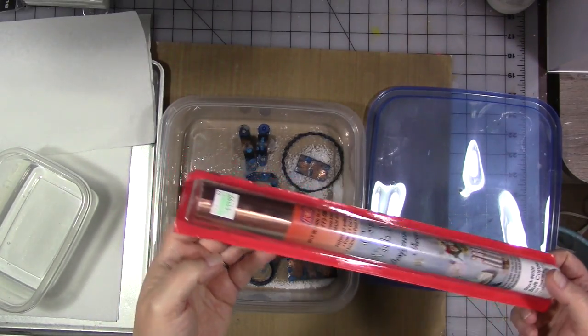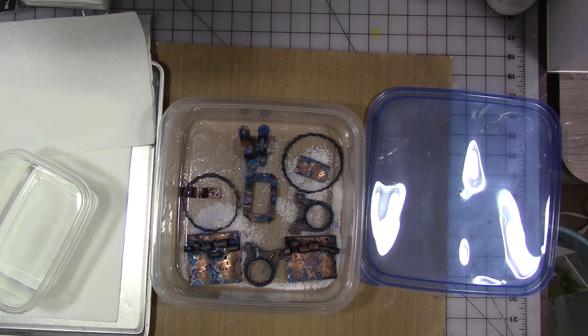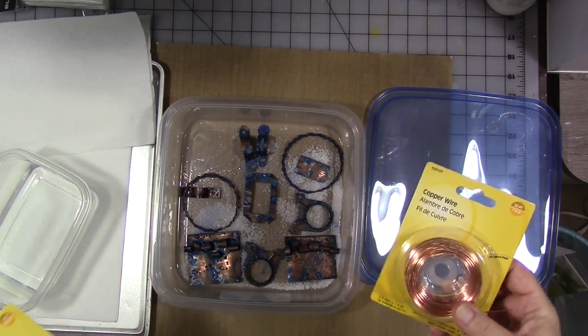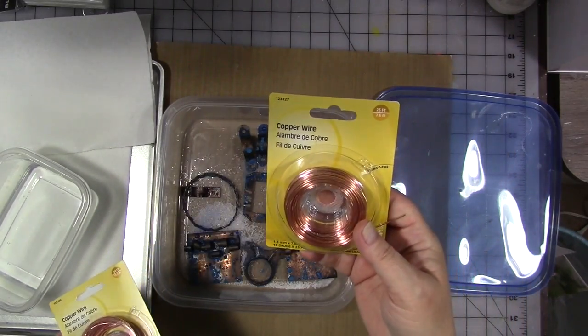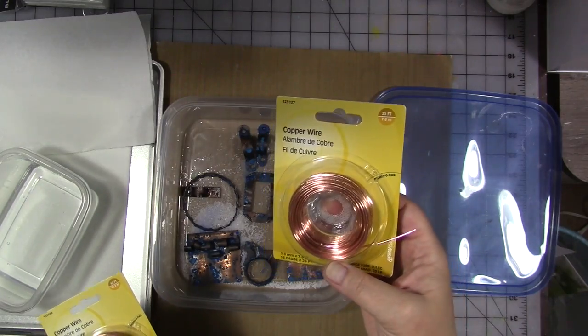The copper wire I got two different gauges. I got a thicker gauge which I made into the circle, and that was a 16 gauge. Then I got a thinner gauge which is 20 gauge. These are both from the hardware store.